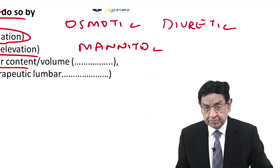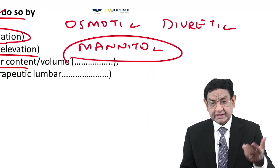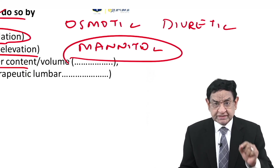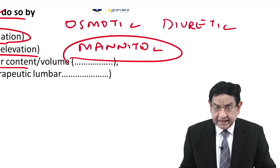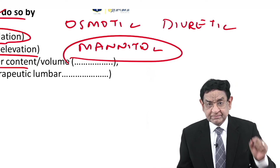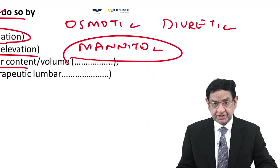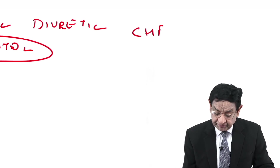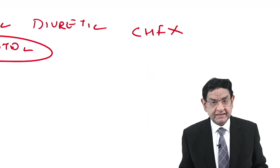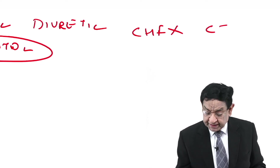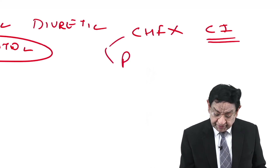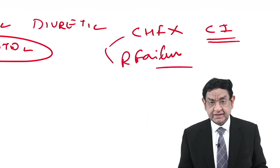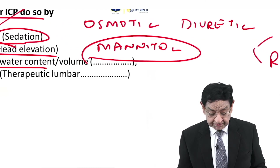One of the most commonly used initial methods in intensive care to reduce ICP. But I have a question for you — stop the video and write down the answer. You plan to give mannitol to a patient admitted to the neurosurgical ICU. Before giving mannitol, what is the single most important precaution you will take? The most important is the patient should not be in congestive heart failure. If CHF or renal failure is present, giving mannitol is absolutely contraindicated, as the patient may develop pulmonary edema. Cardiac clearance and confirmation that the patient is passing urine is mandatory.